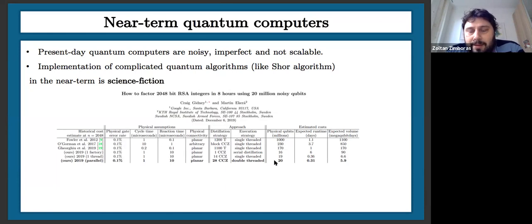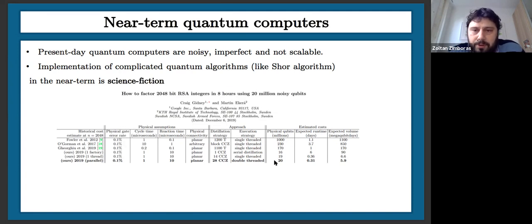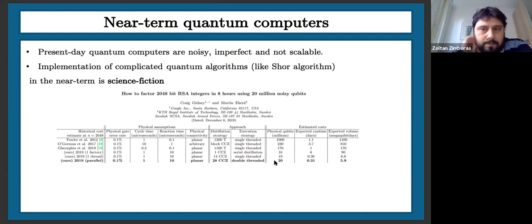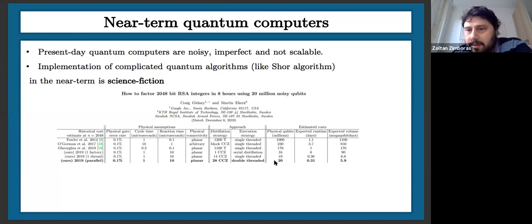Those famous quantum algorithms from the early times of quantum computing — like Shor's algorithm — if you implement them, you would need a full-fledged error-corrected quantum computer. You would need small errors and, despite those small errors, a lot of physical qubits for logical qubits. Although we hope this becomes reality in the midterm, in the very near term — the next five years or so — it's still science fiction. Maybe in 10–15 years we'll have something.